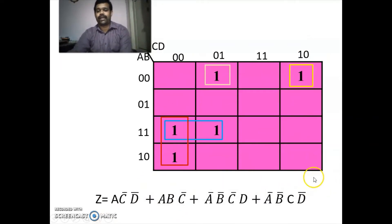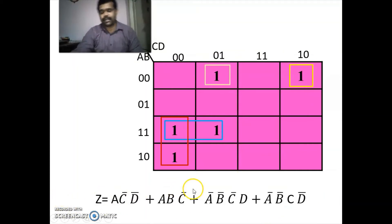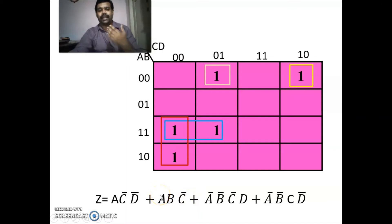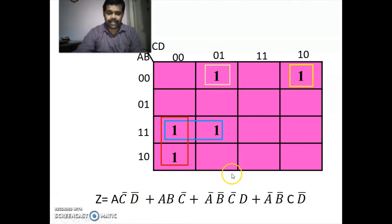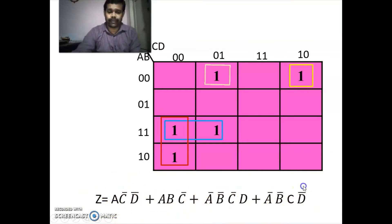All previous expressions have three or fewer product terms. But the expression for Z has four product terms, so it cannot be directly implemented. However, a few terms of Z are similar to those of W, so we check that.